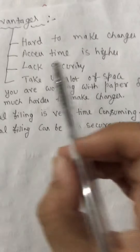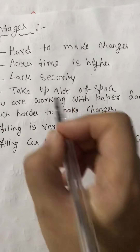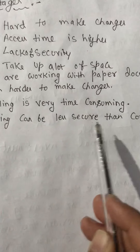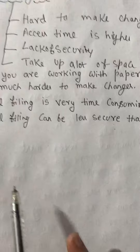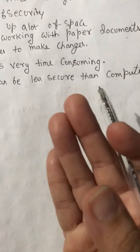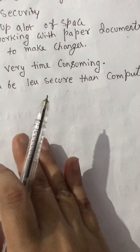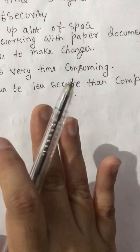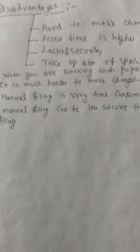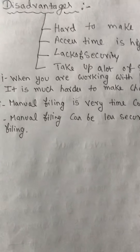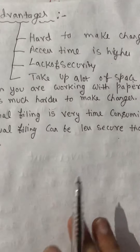The third disadvantage is lack of security. Manual filing can be less secure than computer filing. For example, misplaced documents can easily be placed in the wrong hands and you are at risk of losing them. The fourth disadvantage is that manual filing takes up a lot of space.